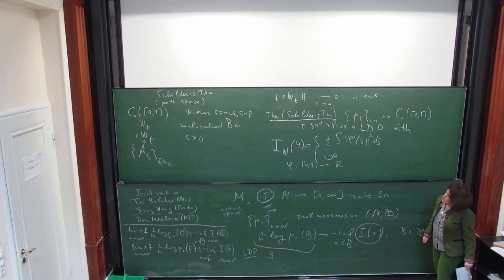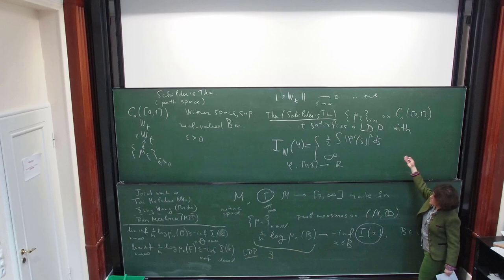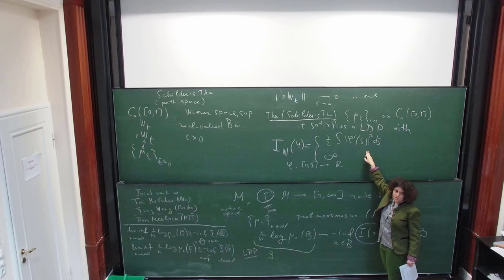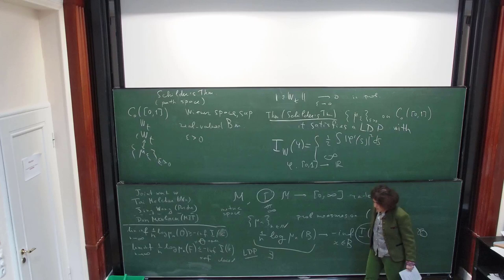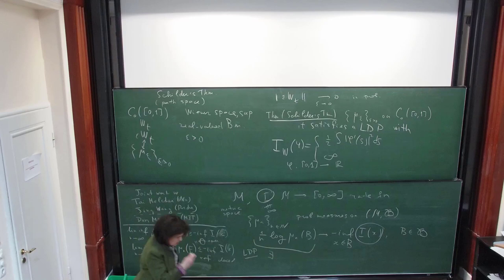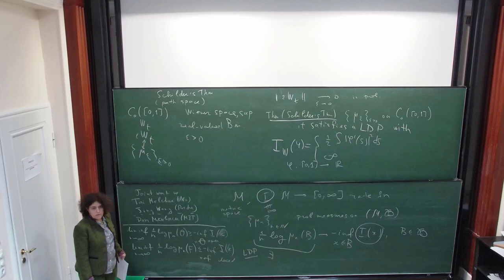The rate function is also called an energy function, and this is significant. Essentially what we see is that the rate function in this case describes where the energy is finite. We know that for most Brownian paths it will be infinite. The Cameron–Martin paths are exactly the ones for which if you shift Brownian motion by such a path, you get a distribution absolutely continuous with respect to the original one — it's an if-and-only-if statement.